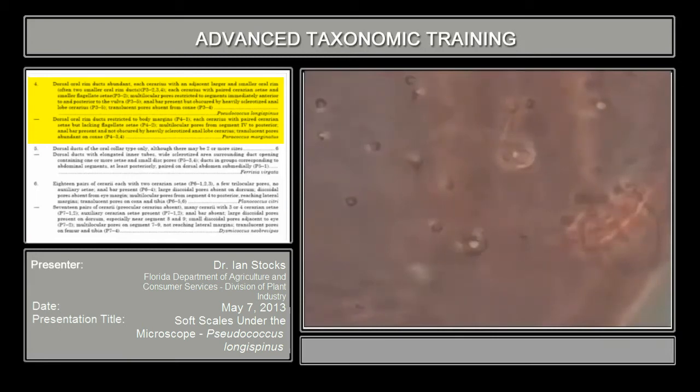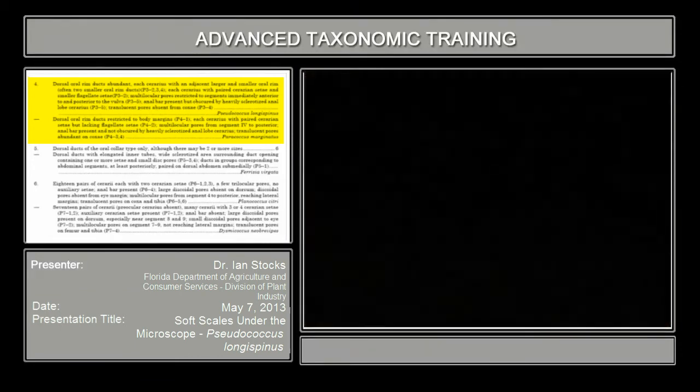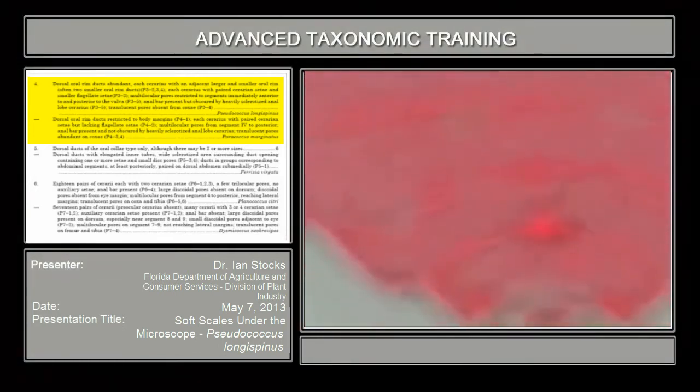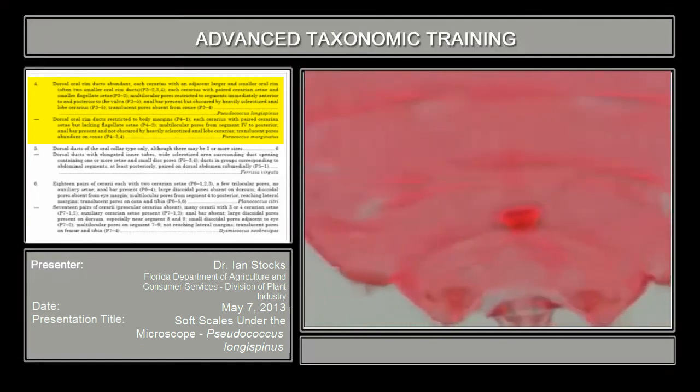Okay? Now, let's see. Okay. All right. So, the next, so we've established that there are oral rim ducts. With each serarius having an oral rim duct and two smaller rim ducts, it has paired serari and setae and smaller flagellate setae. So, now let's see, and we've also found the anal bar. So, what we're going to do now is go down in magnification to the very posterior again. We'll find the anal lobes, the anal ring, and the region where the vulva is. Okay? Because, again, if we were going to search for multilocular pores, if they're going to be anywhere, they're going to be around the vulva, which is on the ventral surface, around the eighth segment, so near the very end.